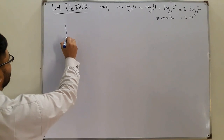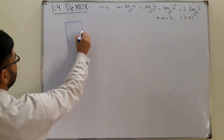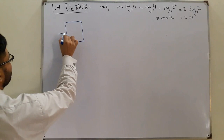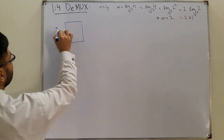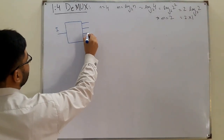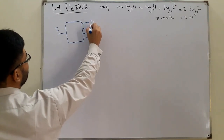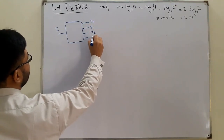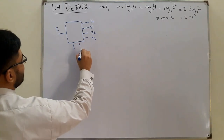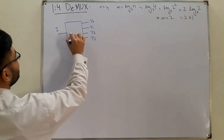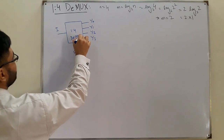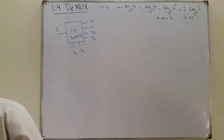Now let's draw the multiplexer. We have the single input line I, outputs y0, y1, y2, and y3, and select lines s0 and s1. This is the 1-to-4 demultiplexer.